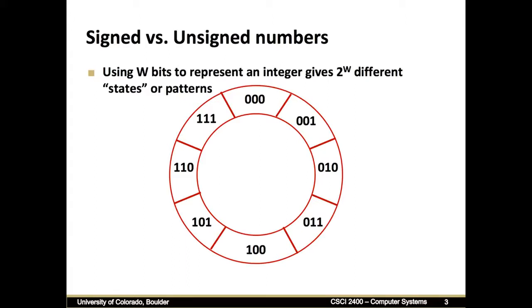We're assuming that we have w bits to represent an integer and that it's a fixed size number of bits. Because we have w bits, we then have 2 to the w different combinations or states. So each bit can take 2 different states, and because there are 3 of them, the number of possible states is 2 times 2 times 2 or 2 to the 3.